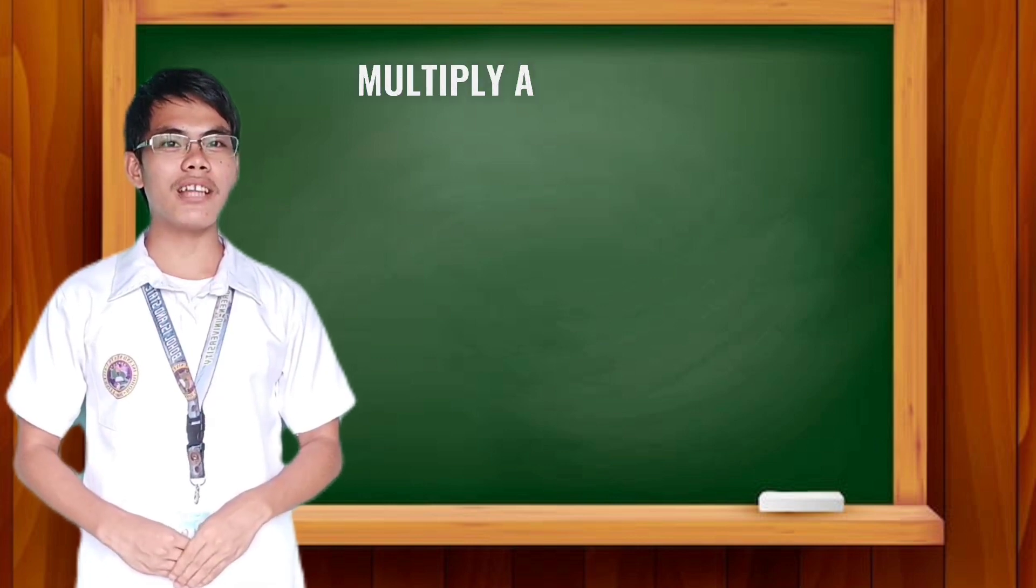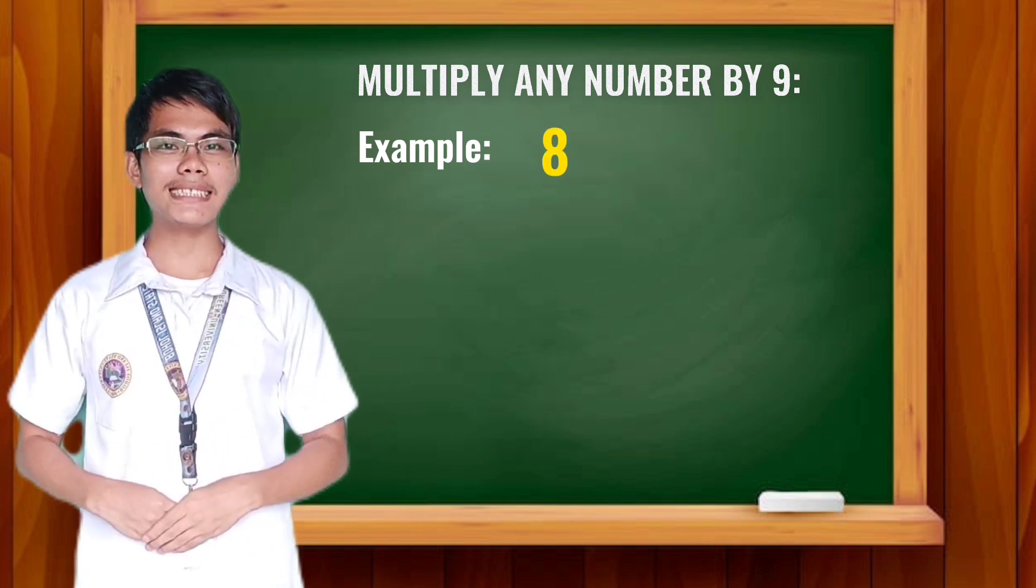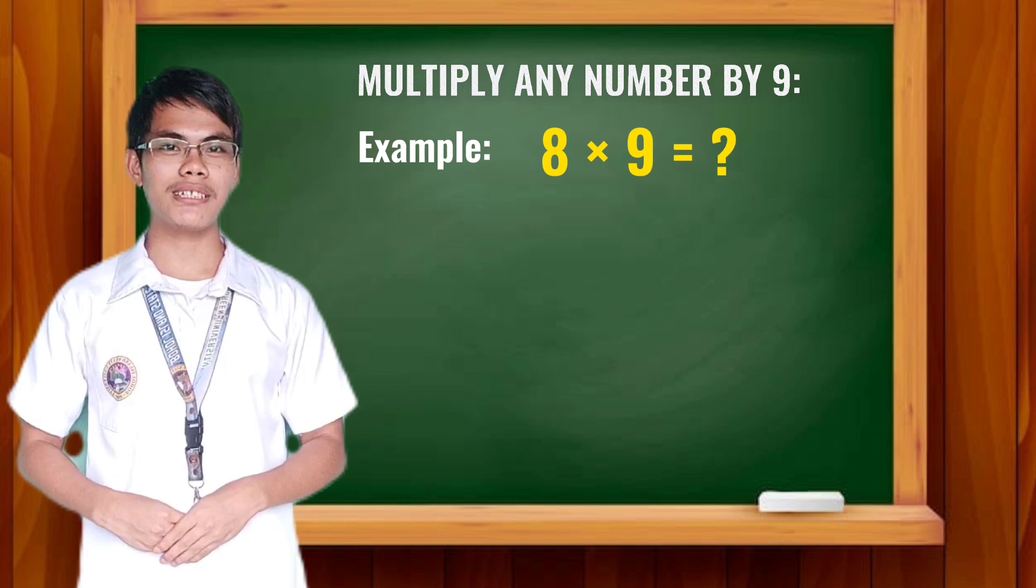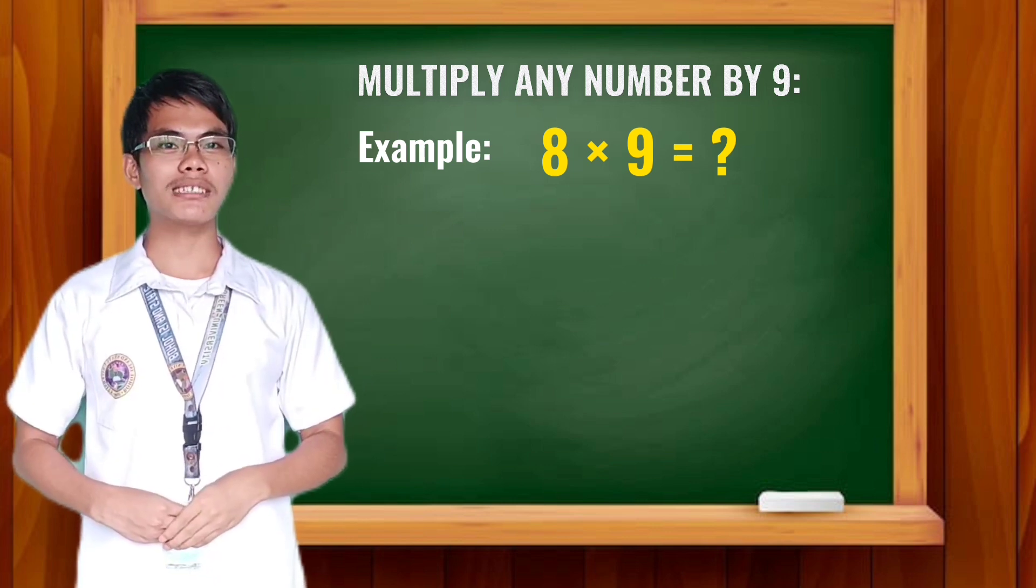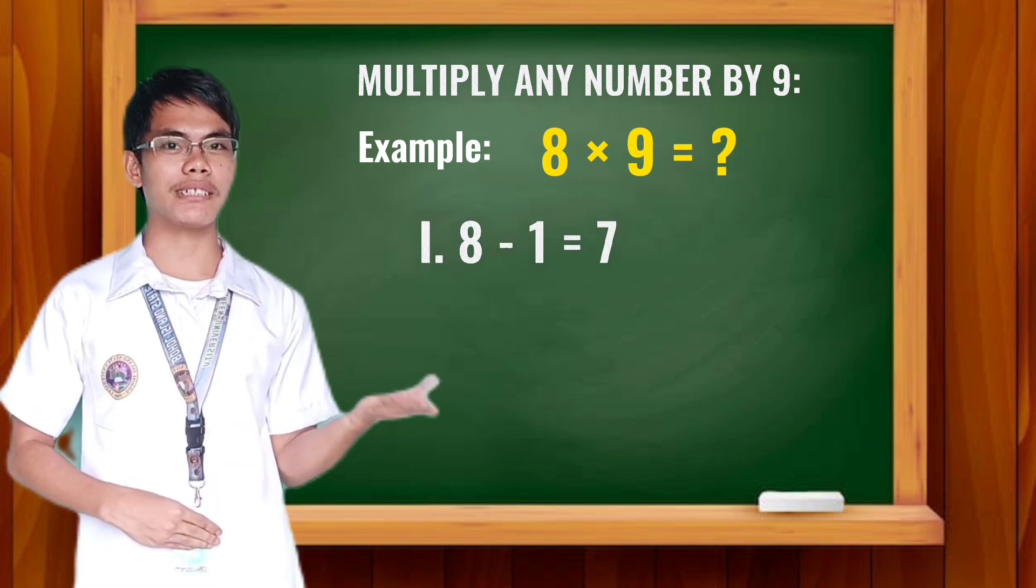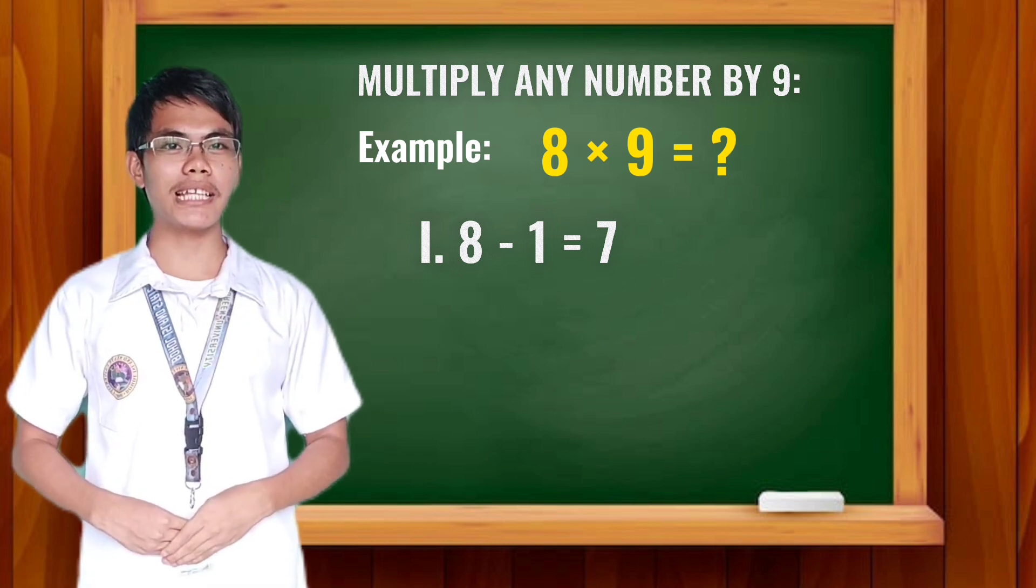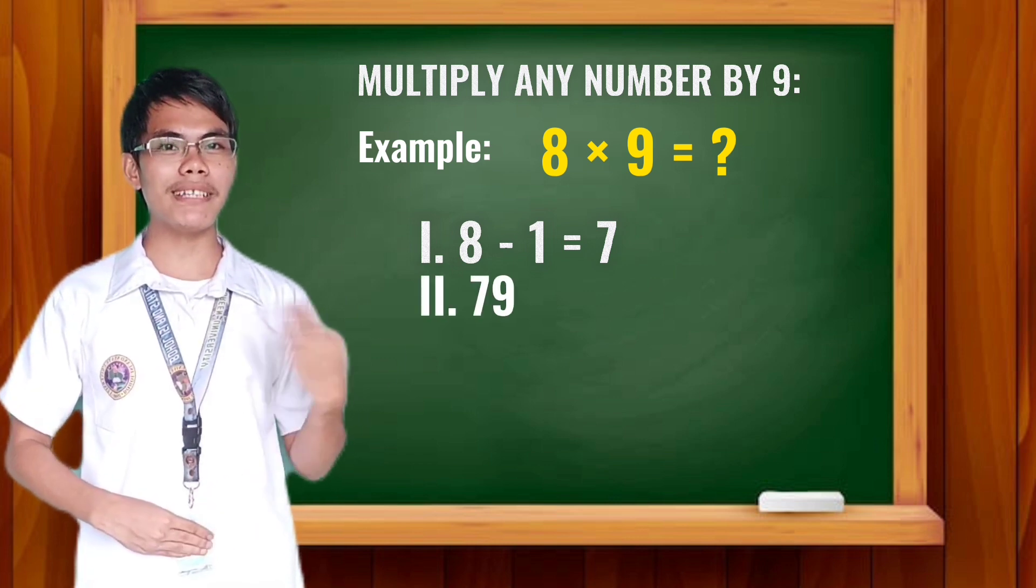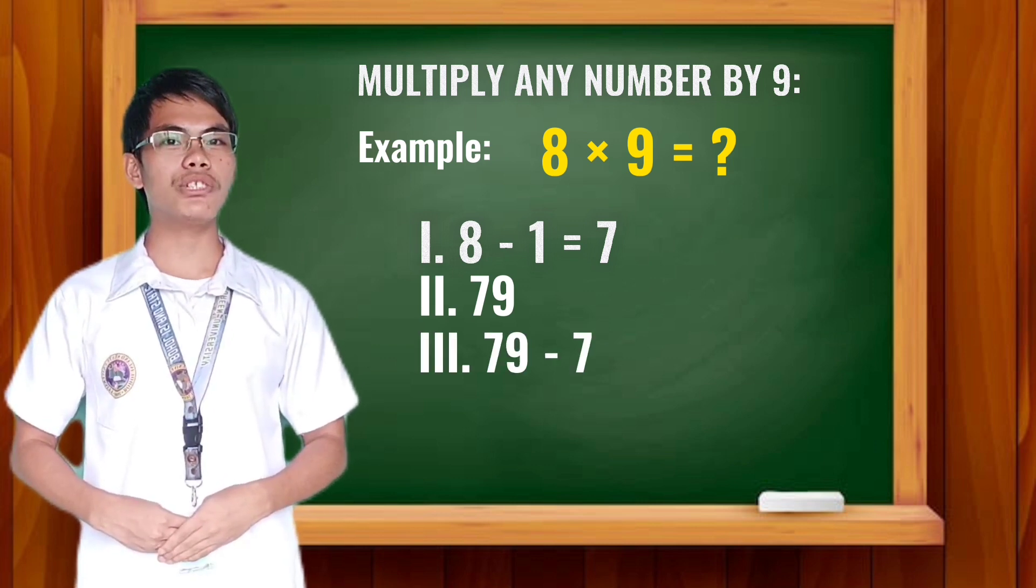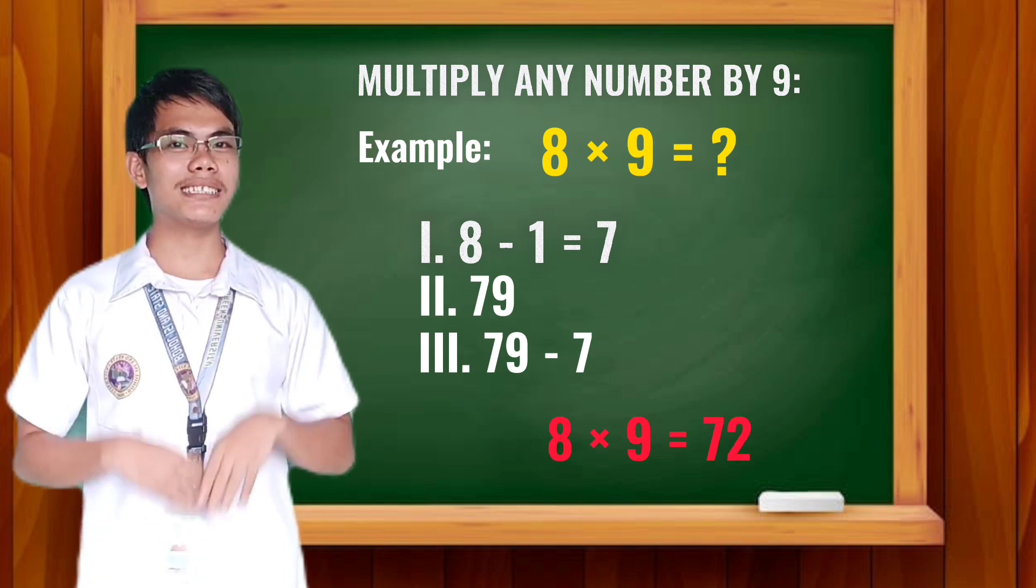We will first multiply any numbers dealing with 9. So we have here 8 times 9. Let's apply the steps. First step: Subtract the multiplicand by 1. So 8 minus 1 is equal to 7. Next step: Copy the answer 7 together with the multiplier 9. So it will be 79. Lastly, subtract 79 by the answer in the first step, which is 7. Therefore, the product of 8 multiplied by 9 is 72.